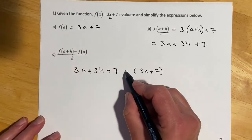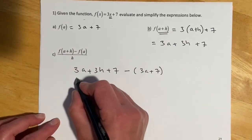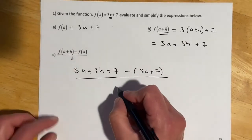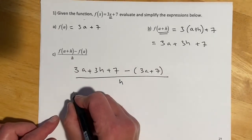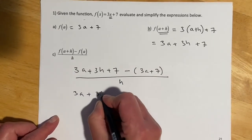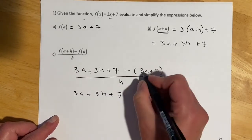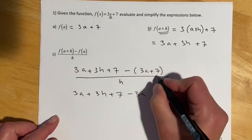Those parentheses are totally important. Otherwise, the 7s end up not canceling, and that ends up being a bummer. And then all this is over h. So then if I distribute that sign, so minus 3a and then minus 7.